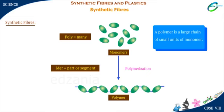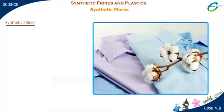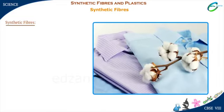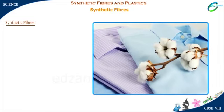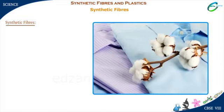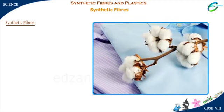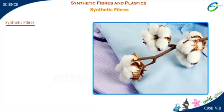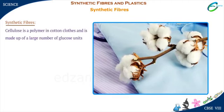So we can say that a polymer is made of many repeating units. The cotton clothes that we wear is an example of a polymer called cellulose, and this cellulose is made up of a large number of glucose units.